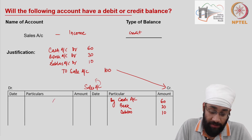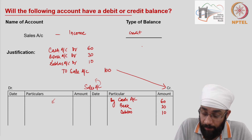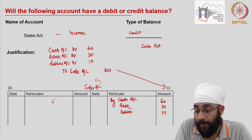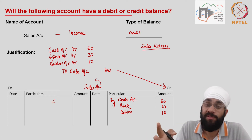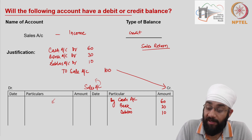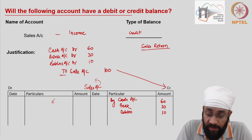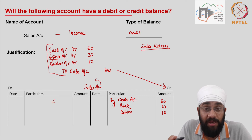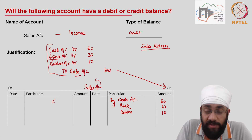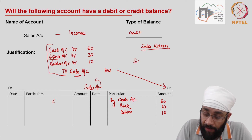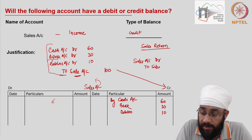There is no journal entry on the debit side of sales account except for one: sales return. Sales return means you sold goods to the customer and the customer returns them — you had a money-back guarantee policy. If that happens, you reverse the transaction: sales account debit to sales return account.